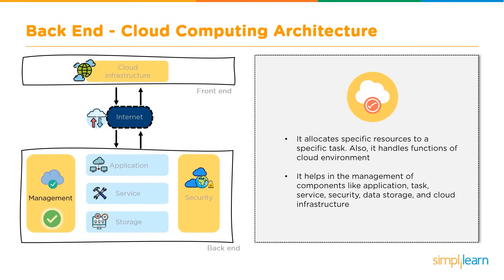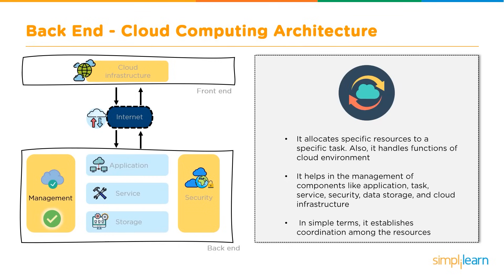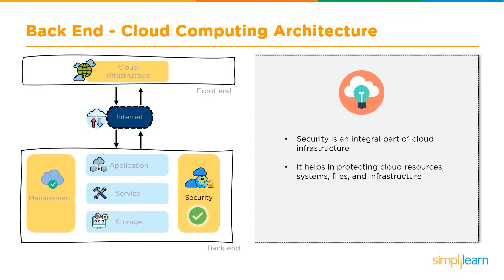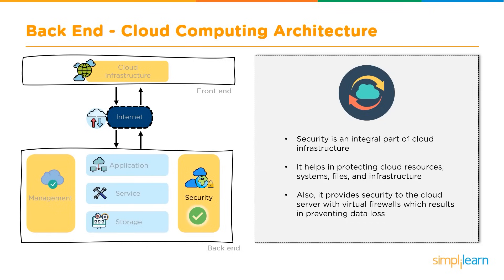The management in the back-end architecture helps manage components like applications, tasks, services, security, data storage, and cloud infrastructure — in simple terms, it establishes coordination among resources. The security aspect is an integral part of cloud infrastructure; since it mostly relies on storage and databases, it must be highly secure. It helps protect cloud resources, system files, and infrastructure, and provides security to cloud servers through virtual firewalls, preventing data loss.